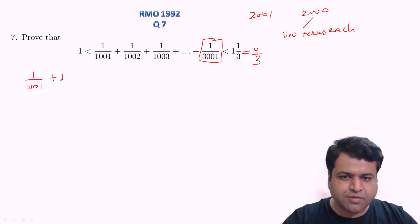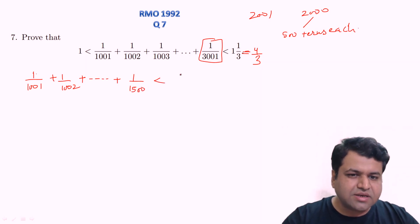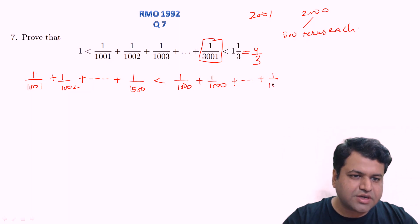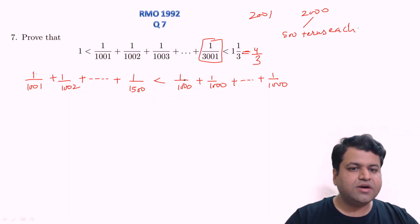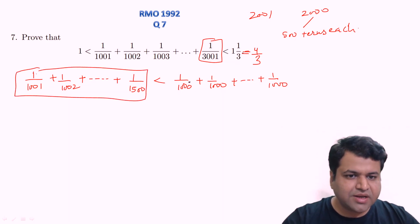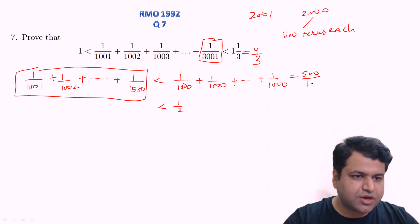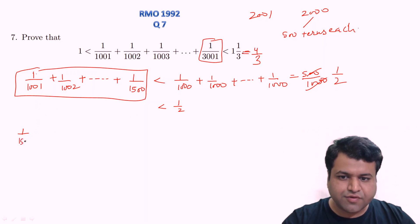The first part consists of the first 500 terms: 1/1001 + 1/1002 + ... + 1/1500. Each term here is less than 1/1000, so this part is less than 500/1000 = 1/2. The second part is 1/1501 + 1/1502 + ... + 1/2000, which is less than 500/1500 = 1/3.